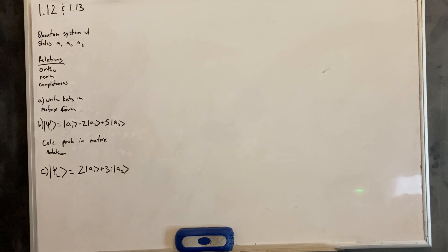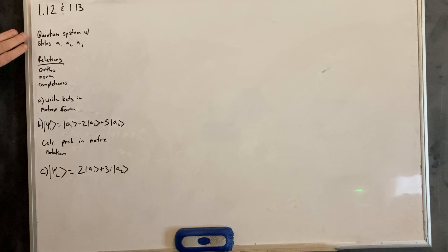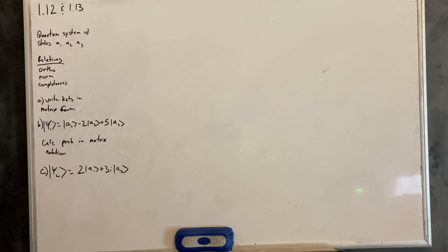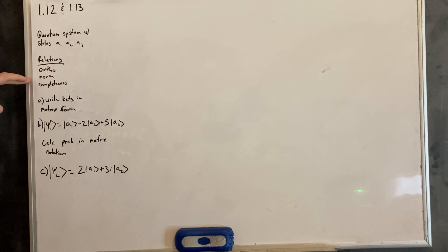So 1.12 and 1.13 I combined because they kind of go together. 1.12 is super short. What 1.12 is saying is take a quantum system with three states, A1, A2, and A3, and show the different relations — the orthogonality relations, the normalization relations, and the completeness.